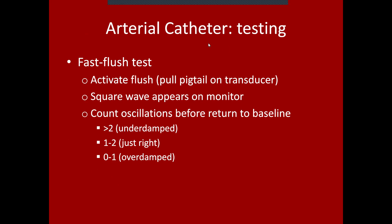To determine if our arterial catheter is appropriately damped, you can look at it, but the gold standard is to do some testing. There's a test known as the fast flush test. Recalling the arterial line setup — it has a pressure transducer and a flush system allowing you to purge the system with your pressurized saline bag.